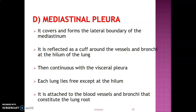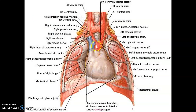The mediastinal pleura covers the lateral boundary of the mediastinum — it lies on the medial surfaces of the lungs toward the hilum. This mediastinal pleura is reflected as the pleural cuff at the hilum of the lung, surrounding the vessels and bronchi. It is continuous with the visceral pleura. Each lung lies freely except at the hilum, where the mediastinal pleura is attached to blood vessels and bronchi, forming the lung root.